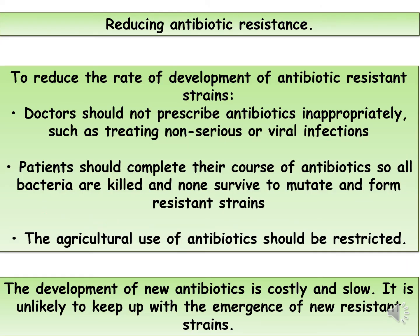To reduce the rate of development of antibiotic-resistant strains, doctors should not prescribe antibiotics inappropriately, such as for non-serious or viral infections. Patients should complete their full course of antibiotics so all bacteria are killed and don't survive to form resistant strains. The agricultural use of antibiotics should be restricted. The development of new antibiotics is costly and takes a very long time, and it is unlikely to keep up with the emergence of new resistant strains.